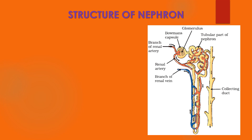Each nephron is connected by two types of blood vessels. The first blood vessel connects to the nephron — this is the branch of the renal artery, which brings blood into the Bowman capsule, also called the afferent arteriole. The second is the branch of the renal vein, which brings the filtered blood from the nephron back to the renal veins. The coiled tubule nearer to the Bowman capsule is called the PCT, proximal convoluted tubule, and the coil away from the Bowman capsule is called the distal convoluted tubule, DCT.